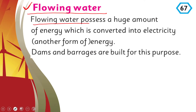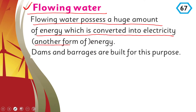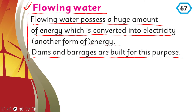Flowing water also has a great amount of energy. It possesses a huge amount of energy which is converted into electrical energy and other forms of energy. Dams and barrages are built for this purpose. The electrical energy produced from water is then used for daily purposes like running fans, lights, and other applications.